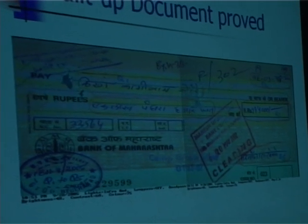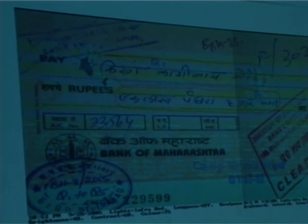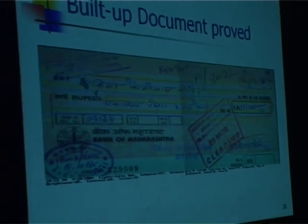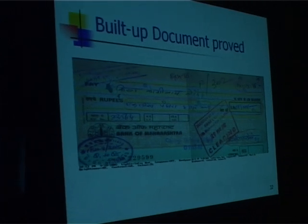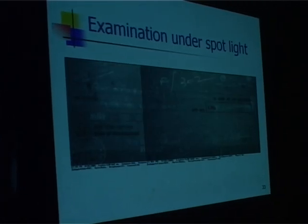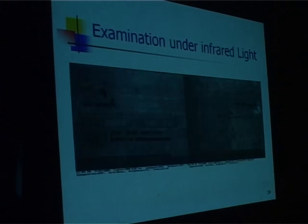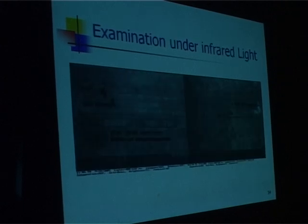Another case of alteration in a document — figure 1 was added. Originally the check was for 15,000 rupees only, and figure 1 was added. In words also, the writing has been added on the check. This is the processed image — you can see the fluorescence of figure 1 and the rest of the figures differs.